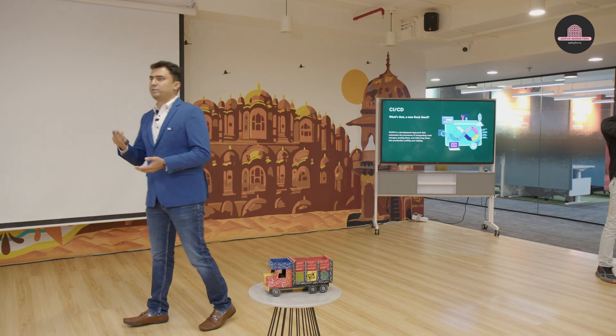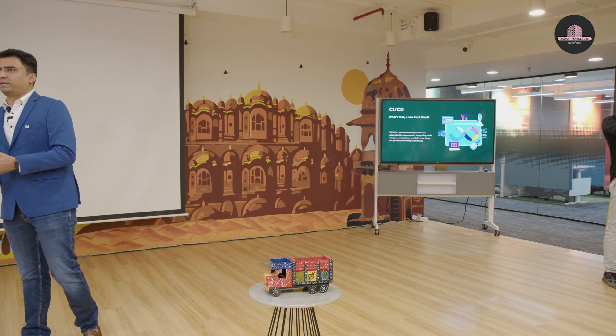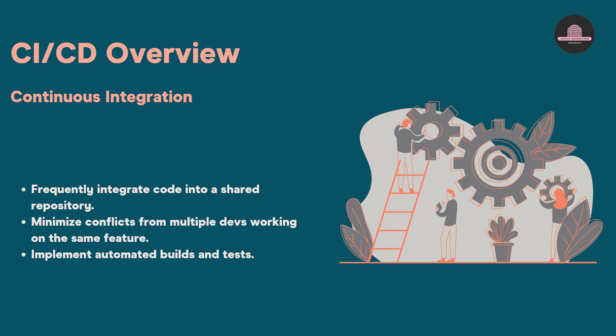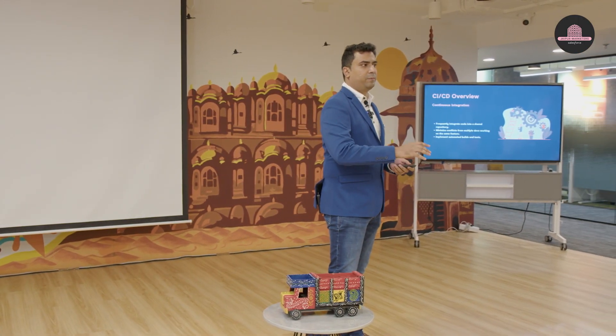CI/CD is a software development approach where multiple developers working together build their code, integrate it into a single repository, and then deploy it efficiently and reliably into higher environments. All of this happens with automated tests and builds, so basically all the effort you'd have spent doing deployments manually is taken over by CI/CD. The first part is continuous integration, which allows multiple developers to integrate their code efficiently together, minimizing conflicts and automating the testing process.